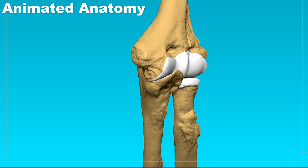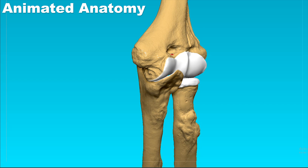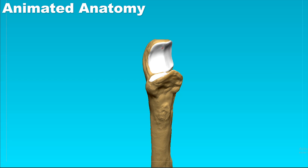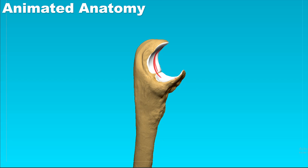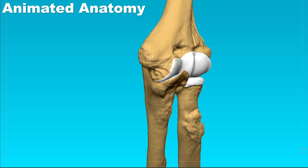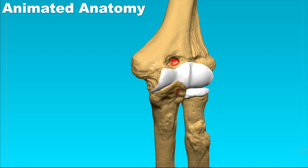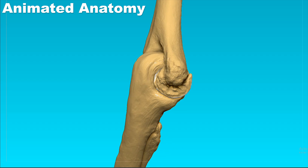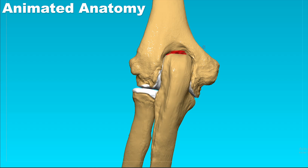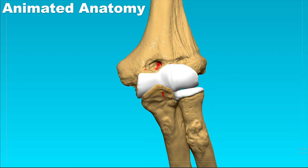We can see that the ulna is articulating with the humerus, and it does so by articulating with the semi-lunar notch. It is constricted here and it is created by the olecranon process and the coronoid process. The coronoid process enters the coronoid fossa, while the olecranon process enters the olecranon fossa of the humerus.